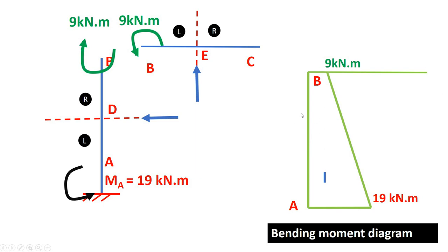If I had a positive moment, I would draw it outside the frame. For the horizontal member, this is also left-side anti-clockwise, which is negative — so it is minus 9. Looking at this diagram, we are getting a negative diagram, just like a cantilever beam. We also get a negative diagram in a cantilever frame. For details of sign convention, refer to my lecture on sagging and hogging bending moment.